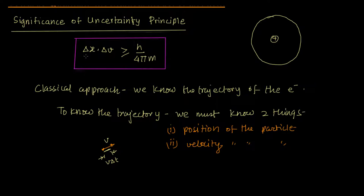Now, this says that you have uncertainty in the position and also in velocity. So you first of all do not know the current position. If you know the current position to a high degree of precision, then you don't know the velocity. What is happening is you know that the particle is here, but you don't know whether the velocity is directed like that, or like that, or like that. So how do you know where it will be after delta T? Because after delta T it can either be here, or here, or here. Can you tell me with certainty where the particle will be? No.